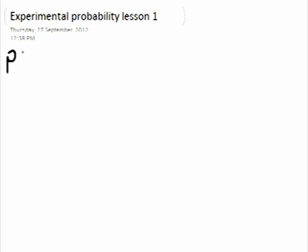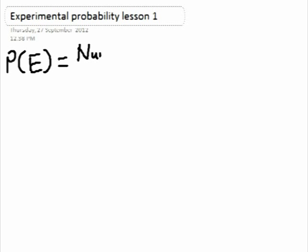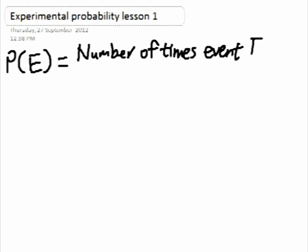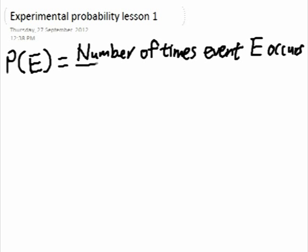The textbook equation for experimental probability is: the probability of an event happening, P(E), is equal to the number of times event E occurs, divided by the total number of trials.